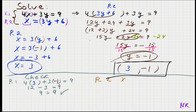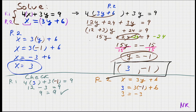Let's check row 2, which was x equals 3y plus 6. With x equals 3 and y equals negative 1: 3 equals 3 times negative 1 plus 6, which is negative 3 plus 6 equals 3. So 3 equals 3 — a true statement again. So (3, -1) is a perfectly fine solution.